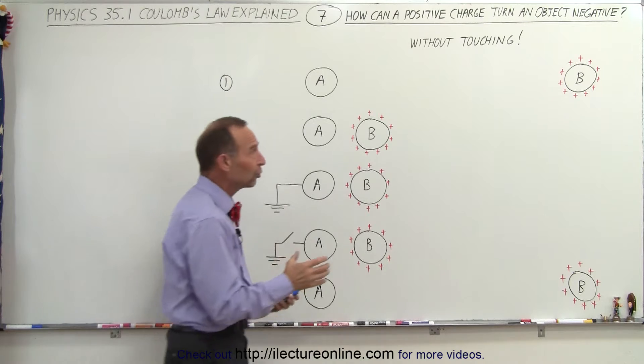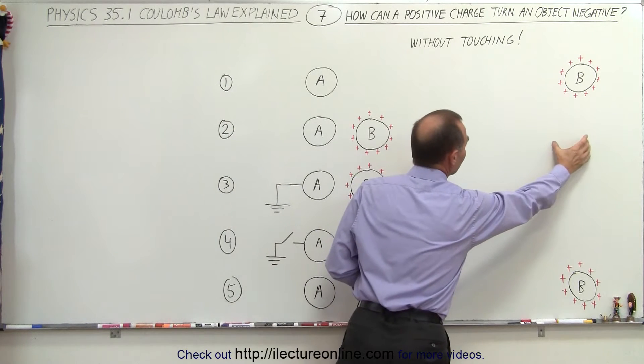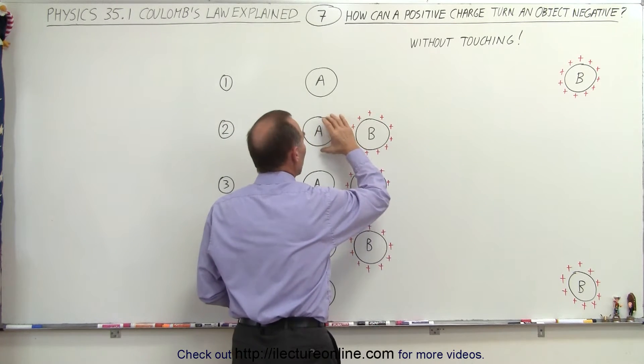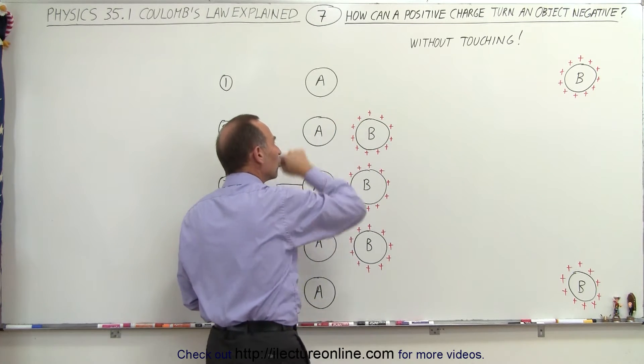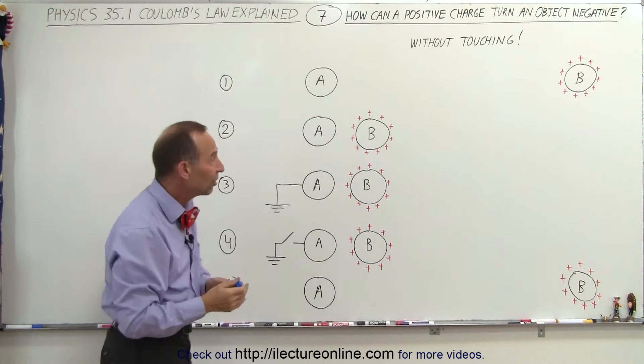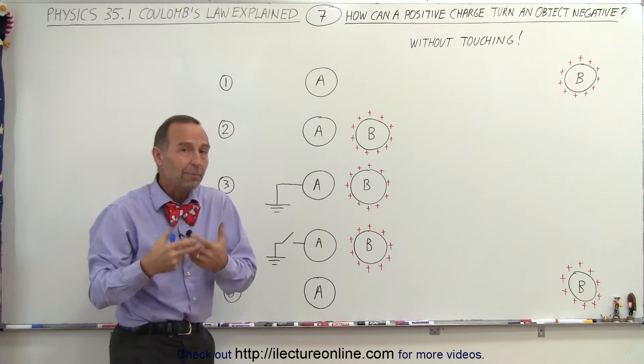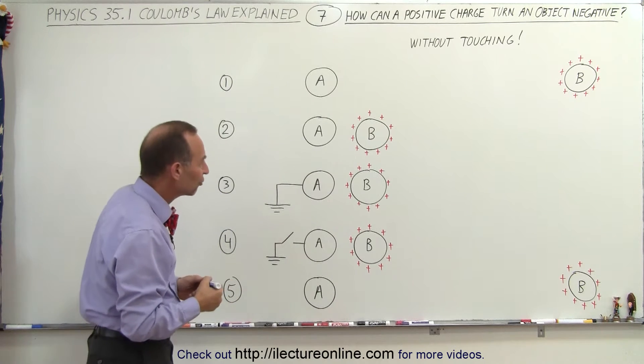The way to do that is to first bring the metal sphere B much closer to A so that there's a much stronger influence on the charges on A. At this point, A still is neutral because it has just as many positive charges as it has negative charges.